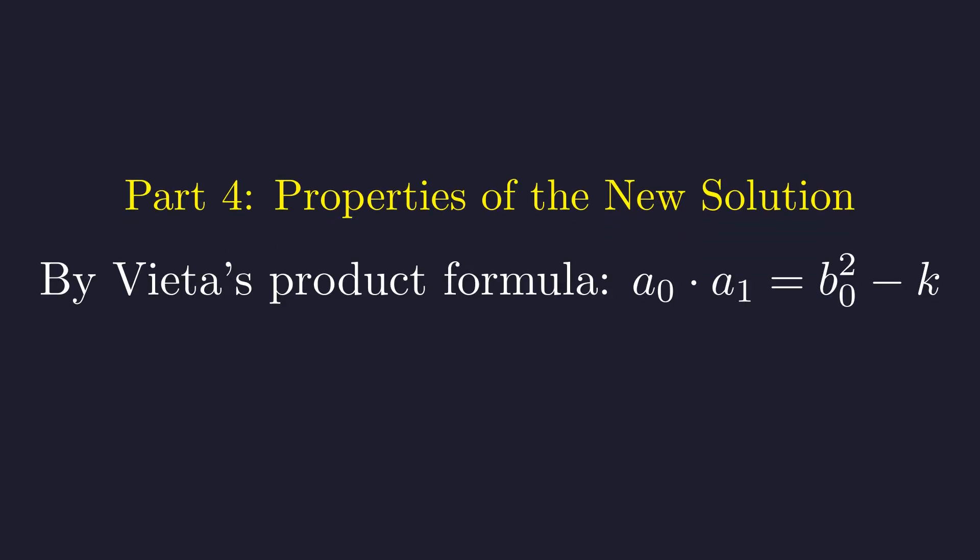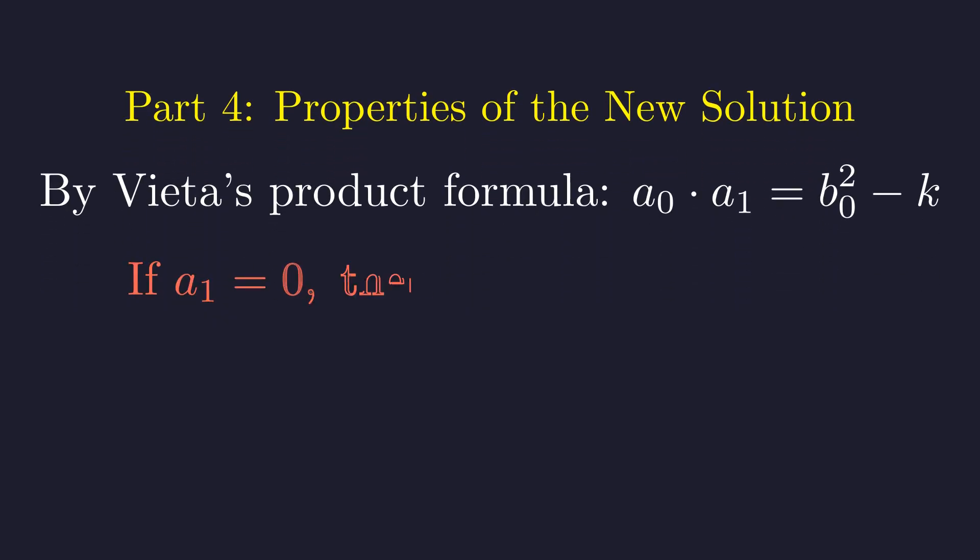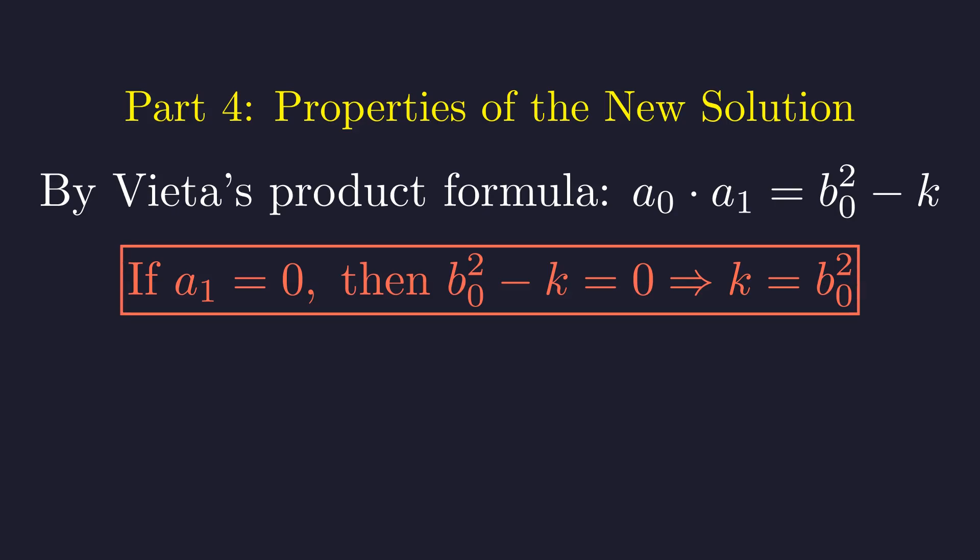Now we need to understand what kind of integer this new root a1 is. The key insight is that the pair a1, b0 is also a solution to our original equation. Vieta's second formula gives us the product of the roots: a0 times a1 equals b0 squared minus k. Could a1 be 0? If so, then b0 squared minus k would be 0, making k equal to b0 squared. But this would make k a perfect square, contradicting our assumption. Therefore, a1 cannot be 0.